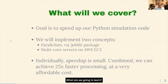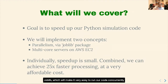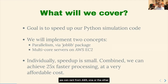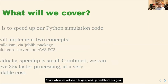What are we going to learn? The goal is to speed up our Python simulation code. We're going to implement two concepts: JobLib, which will make it very easy to run our code concurrently or in parallel, and high-power multi-core servers that we can rent from AWS. One or the other is only going to give us a limited speed up. But when we combine the two together — using parallelism on a server that is highly optimized to take advantage of that — that's when we will see a huge speed up.